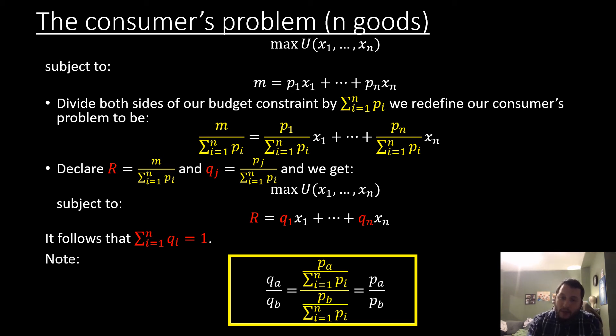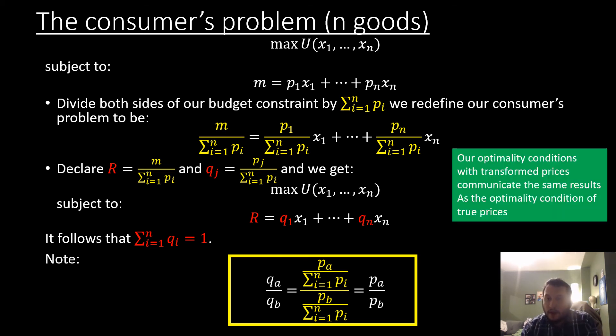The main takeaway you should note from this part is that our optimality conditions with transformed prices communicate the same results as the optimality conditions of our true prices.